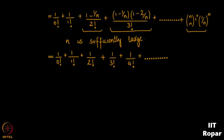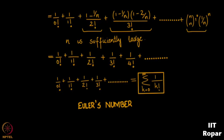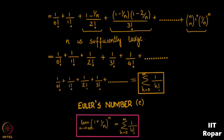So (1 + 1/n)^n becomes the summation of 1/k! for k from 0 to infinity. This is the famous Euler's number e. We have arrived at e by expanding (1 + 1/n)^n using the binomial theorem. That was one application of the binomial theorem.